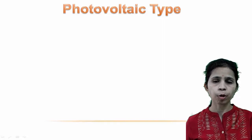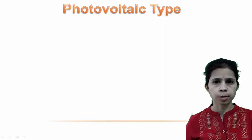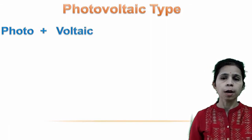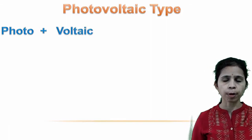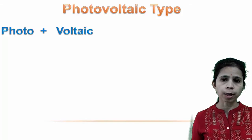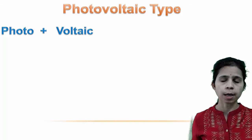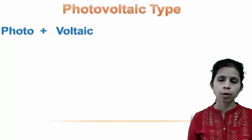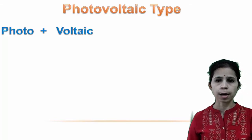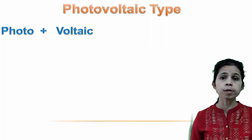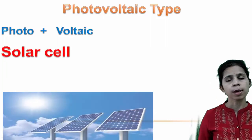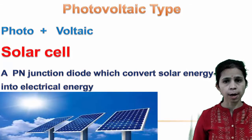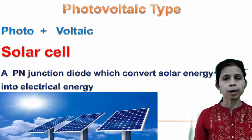The word photovoltaic is a combination of photo plus voltage. In photovoltaic type photoelectric transducers, output voltage is produced due to incident light and is proportional to the intensity of incident light. A familiar example is the solar cell, which is a solar energy converter — a PN junction diode that converts sunlight into electrical energy.